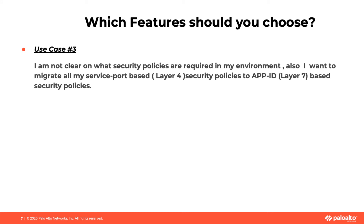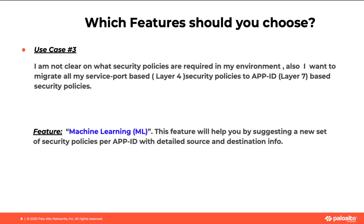Use case number three: I'm not clear on what security policies are required in my environment, and I also want to migrate all my service port-based security policies to App ID-based security policies. In this case, you will choose Machine Learning. By adopting the Machine Learning feature, a new set of security policies will be suggested per App ID with detailed source and destination information.